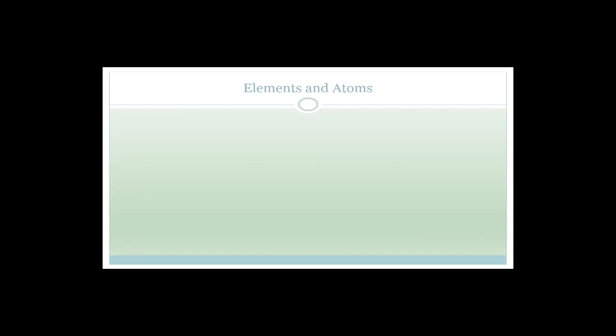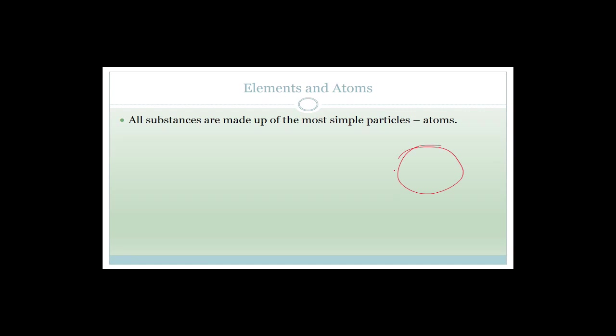We kind of know this stuff already, but we need to go through it anyway to make sure you haven't missed anything from previous years. Let's talk about elements and atoms. All substances are made of the most simple particles, which are atoms. I know that you guys know that atoms are made up of nuclei that have protons and neutrons in them, and that you've got little electrons. But to make it easy to understand what's going on, you need to remember that substances are made up of these simple particles called atoms.